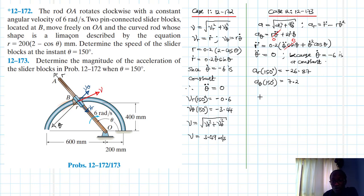So our a is just equal to the square root of ar squared plus aθ squared. Therefore, our a is just equal to, plug in those values, we have 26.87 squared plus 7.2 squared, then square root of that. So we get 27.82 meters per second squared.